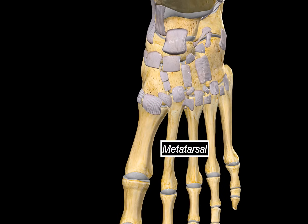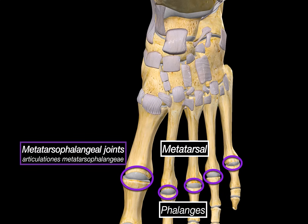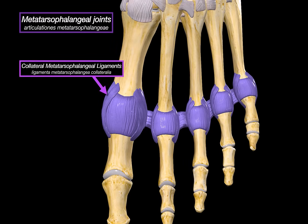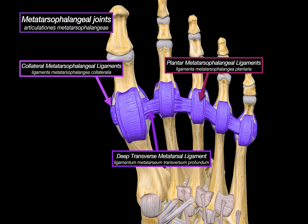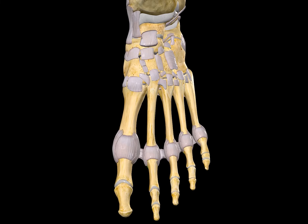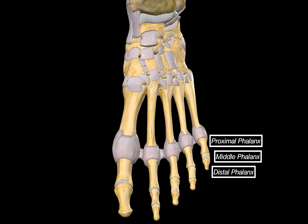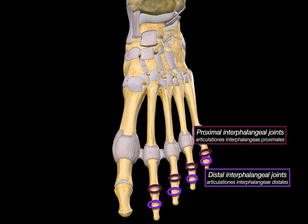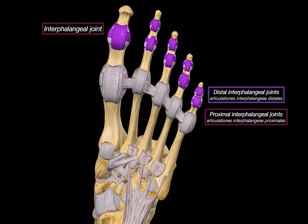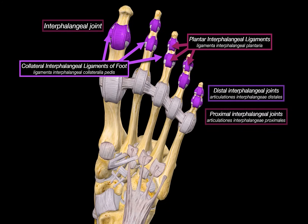Next, between the metatarsals and the proximal phalanges are the metatarsophalangeal joints, held in place by the collateral metatarsophalangeal ligaments and the deep transverse metatarsal ligament, which runs across linking all the metatarsal heads together. From the plantar side, the plantar metatarsophalangeal ligaments reinforce the underside of these joints. Each toe has a proximal, middle, and distal phalanx — except the big toe, which has only two. Between the proximal and middle phalanges are the proximal interphalangeal joints, and between the middle and distal phalanges are the distal interphalangeal joints. The big toe, with no middle phalanx, just has one joint called the interphalangeal joint. All are supported by plantar interphalangeal ligaments and collateral interphalangeal ligaments.